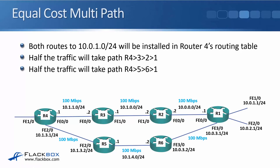So all of our different routing protocols would see these two paths — top and bottom — as being an equal cost path. In that case, R4 will install two routes into the routing table for the 10.0.1 network. The same will happen for the 10.0.2 network in this example as well. Half the traffic will take path R4 to R3 to R2 to R1, and the other half will take the path R4 to R5 to R6 to R1.